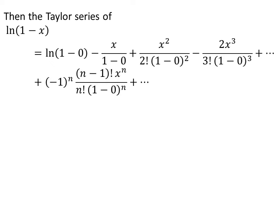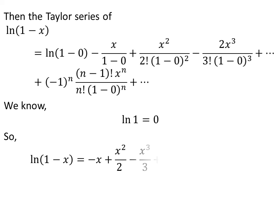Applying the above facts gives us the Taylor series of natural log of 1 minus x, equal to natural log of 1, minus x upon (1 minus 0), plus x squared upon factorial of 2 times (1 minus 0) squared, minus 2 times x cubed upon factorial of 3 times (1 minus 0) cubed, plus so on up to infinity. So the Taylor series of natural log of 1 minus x equals minus x plus x squared upon 2, minus x cubed upon 3, plus so on up to infinity.